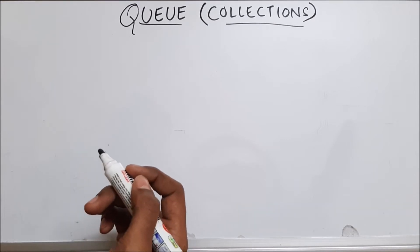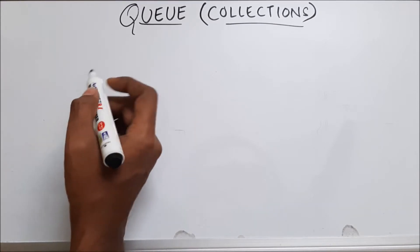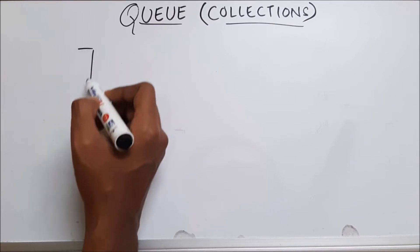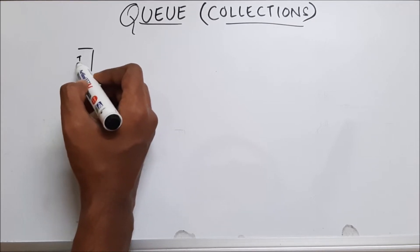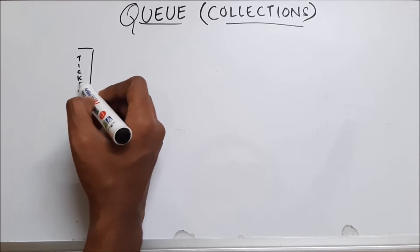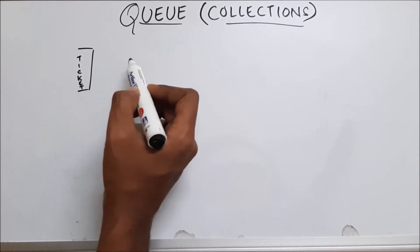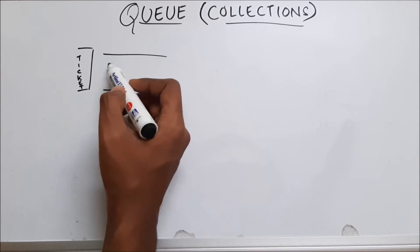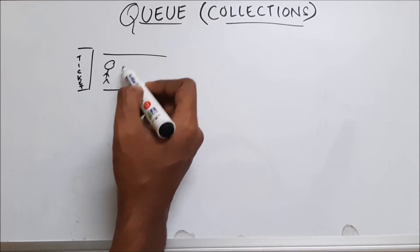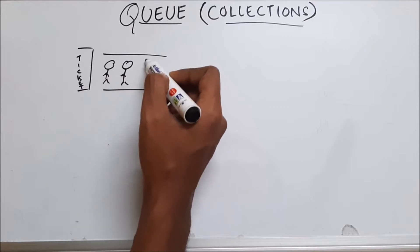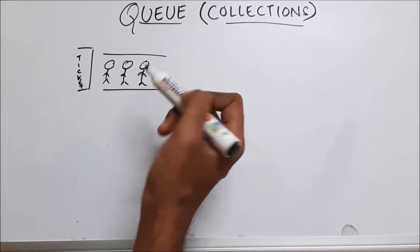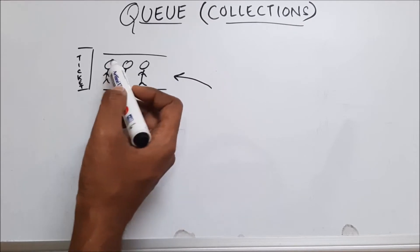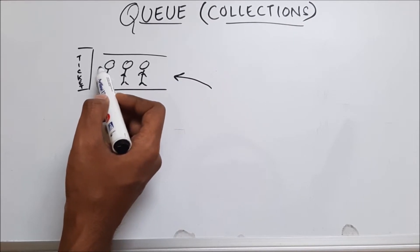Let me first explain what is a queue. In a real world example, let's say this is a ticket counter. People stand in a queue to get their tickets. You can see the person who enters first in the queue is the person who is going to get the ticket first.